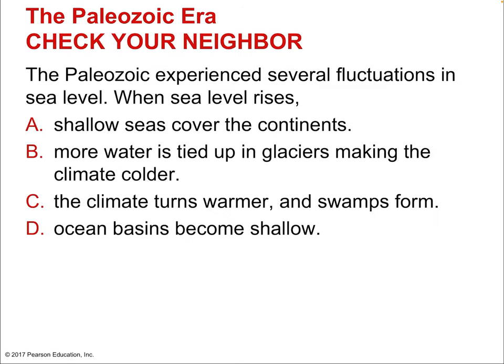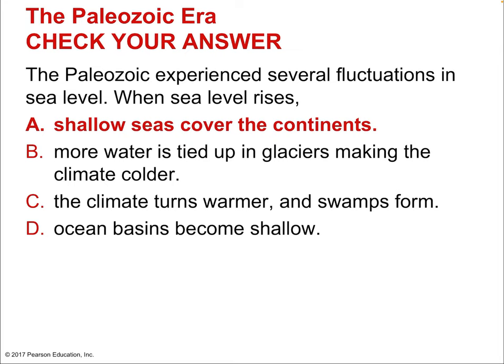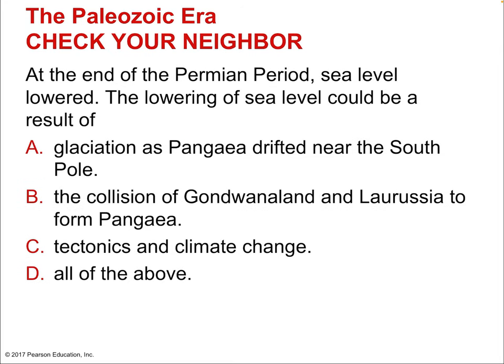The Paleozoic experienced several fluctuations in sea levels. When sea levels rise, shallow seas cover the continents — so continents become quite small with huge expanses of seas; central North America would have been a big shallow sea. At the end of the Permian period, sea levels lowered. The lowering could result from glaciation as Pangaea drifted near the South Pole, from the collision of Gondwanaland and Laurasia forming Pangaea, and from tectonics and climate change — all of the above drove those lowering sea levels. Glaciation tied up water, the collision itself lifted up the continent, and climate change was a catch-all driving force.